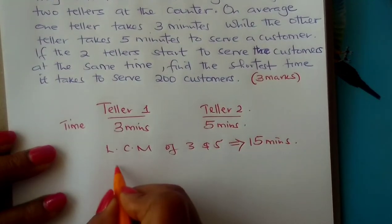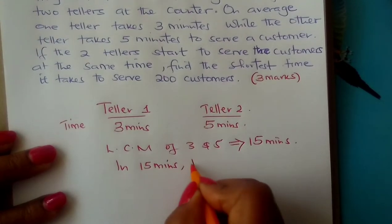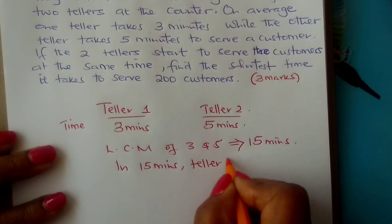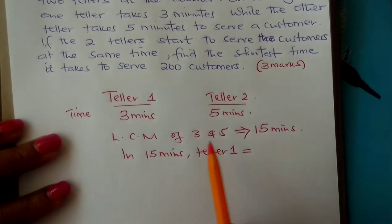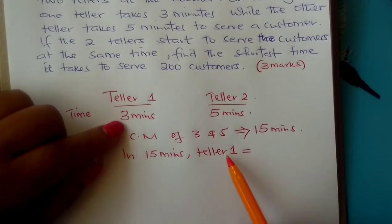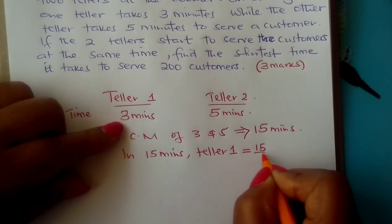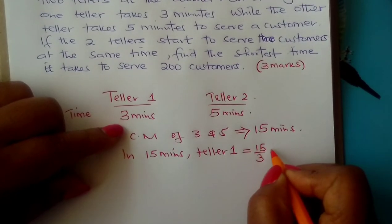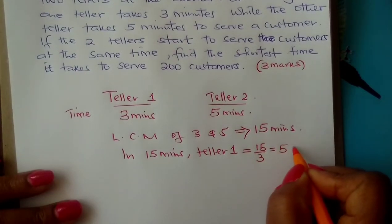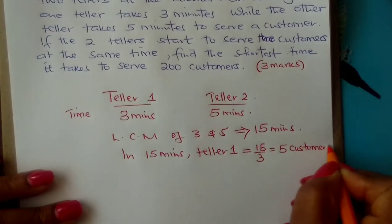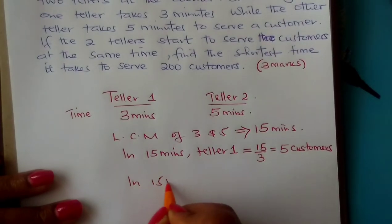You ask yourself: in 15 minutes, teller number one will serve how many customers? Teller number one takes three minutes to serve a customer, so in 15 minutes, you divide by three minutes to get the number of customers. Therefore, teller one will serve five customers in 15 minutes.